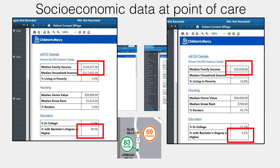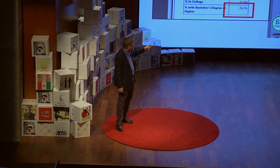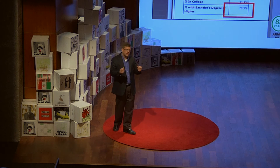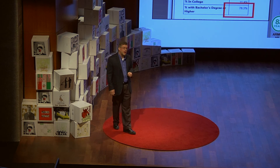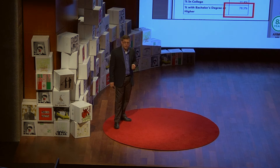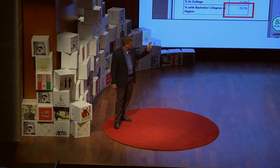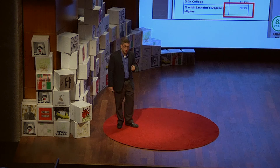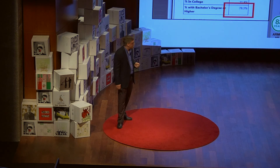Through the census data, we can see that a person coming from the region represented in green is surrounded by people where the average household income is $144,000. For the region in orange, the average household income is $29,000.